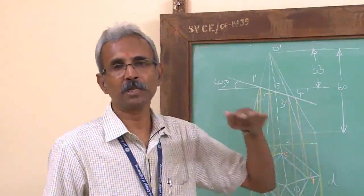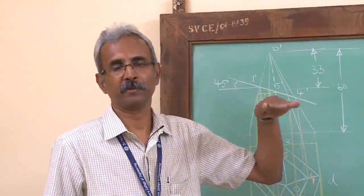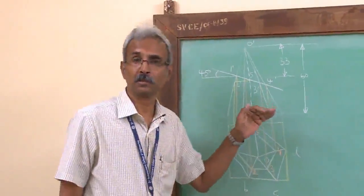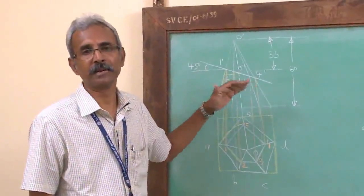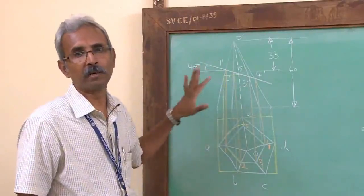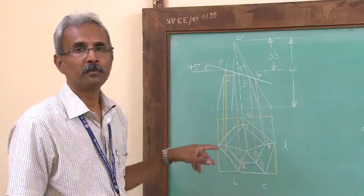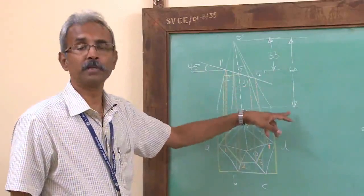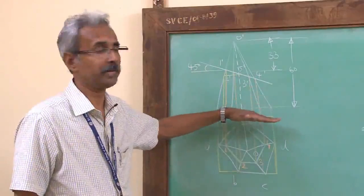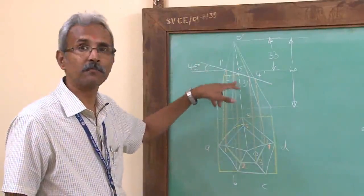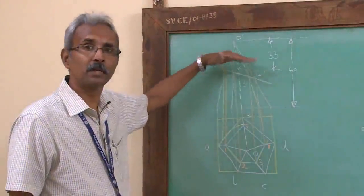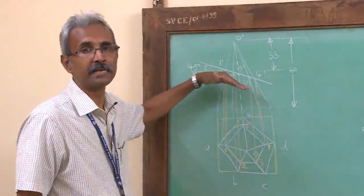Frustum refers to the case where the cutting plane is parallel to the base. Now we will see how to draw the isometric view of a truncated solid, where the cutting plane cuts the solid inclined to the base. In this problem, we have a pentagonal pyramid of height 60 mm, with a sectional plane inclined at 45 degrees to the horizontal plane, cutting through the axis from a point 33 mm from the apex and cutting all the slant edges.